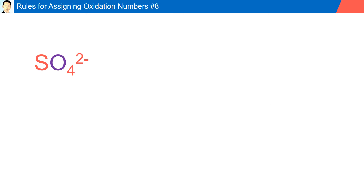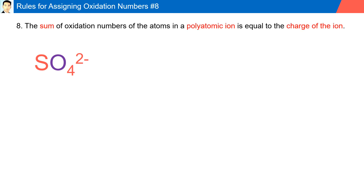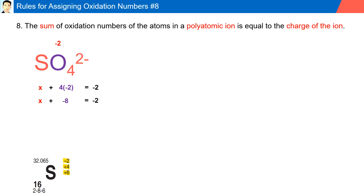Rule number eight: the sum of oxidation numbers of the atoms in a polyatomic ion is equal to the charge of the ion. For example, sulfate (SO4 2−): if we add all the oxidation states, we should have a net charge of minus two. Sulfur has multiple oxidation states, so we solve for it. Oxygen has minus two; there are four oxygens giving minus eight. Adding sulfur plus oxygen should equal minus two, so solving for sulfur gives plus six.